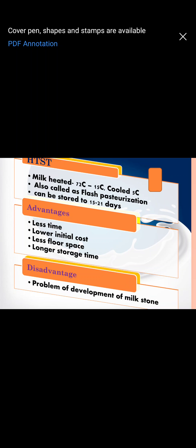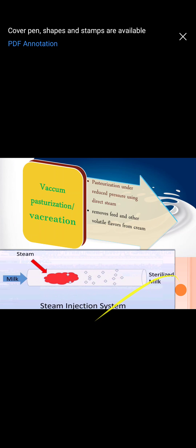The advantages of HTST are that it requires less time, the initial cost is less because you do not require many instruments, less floor space is required, and in a given time duration many loads of milk can be pasteurized. The disadvantage is that because the temperature is high, there are chances that milk stone can be formed — milk stone is basically the dried form of milk that forms on surfaces. Definitely the flavor is also lost.